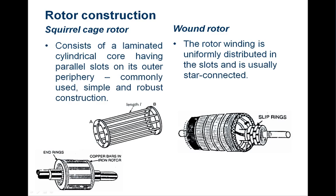It consists of a laminated cylindrical core having parallel slots in its outer periphery — a commonly used, simple, and robust construction. The copper bars are submerged inside the rotor iron, with short-circuiting rings on either side. That is the squirrel cage rotor.